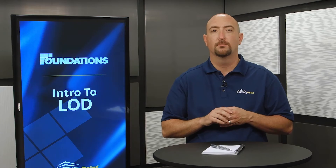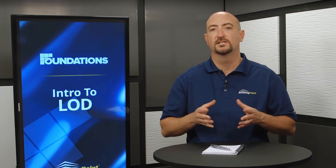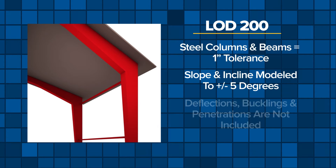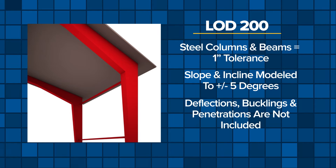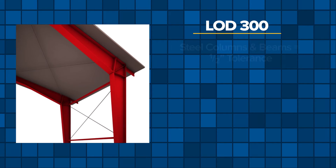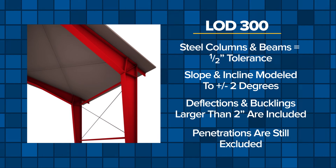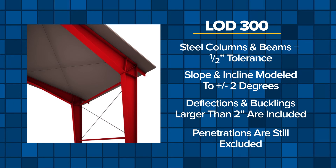Let's take a look at an example of structural steel framing to see what the difference in LOD looks like. At LOD 200, the shape of the tapered steel columns and beams are within a 1-inch tolerance, while the slope of any inclined elements are modeled to plus or minus 5 degrees. Deflection and buckling of the beams and penetrations are not included. At LOD 300, the shape of the tapered columns and beams are within a half-inch tolerance, while the slope of any inclined elements are modeled to plus or minus 2 degrees. Beam deflection and column buckling larger than 2 inches is included, but penetrations are still excluded.